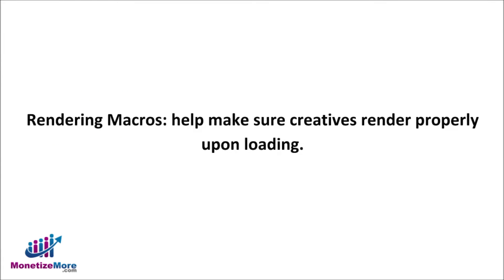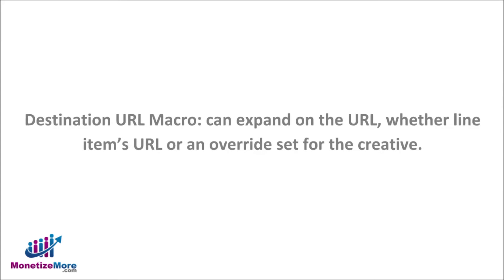The third macro type is the Rendering Macro. There are a handful of rendering macros. These macros help make sure that the creative renders properly upon loading, looking and functioning as they are designed. If the creative code needs to include the URL, and if it changes as the creative or template is used across different line items, then you may want to embed a Destination URL Macro. This particular macro can expand on the URL, whether it be a line item's URL or an override set for the creative within the line item.